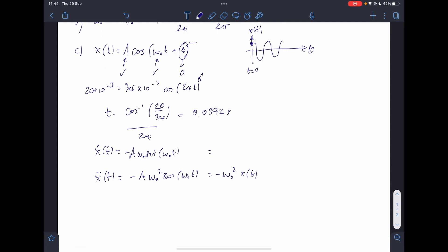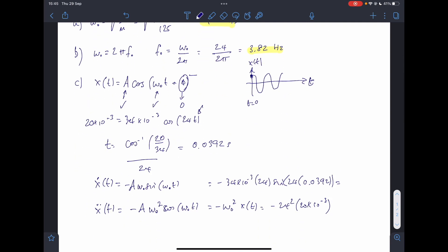So my equation, so here I've got minus 34 times 10 to the minus 3, times by 24, sine of 24, 0.0392. And here I've got minus 24 squared times by 20 millimetres. This, I'm going to do that sum. Minus 0.66 metres per second. Minus 11.52 metres per second squared.